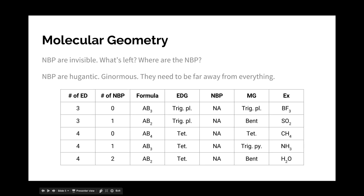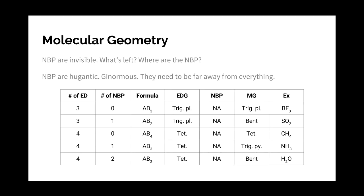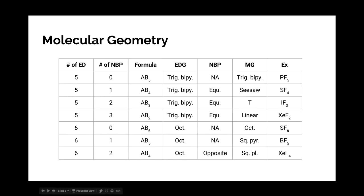that's saying where do the non-bonding pairs go? You'll notice that most of those say NA or non-applicable, and that's because for the most part, all of the positions are equivalent, and it doesn't matter where the non-bonding pairs go. But once you look at five and six electron domains, it does matter sometimes.